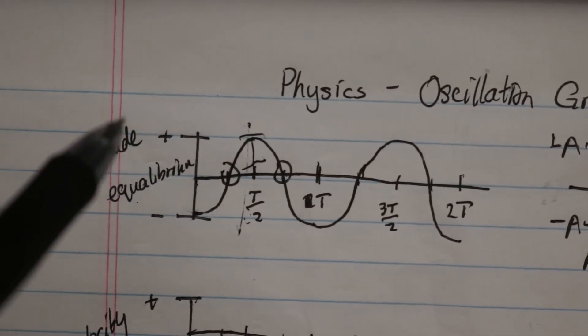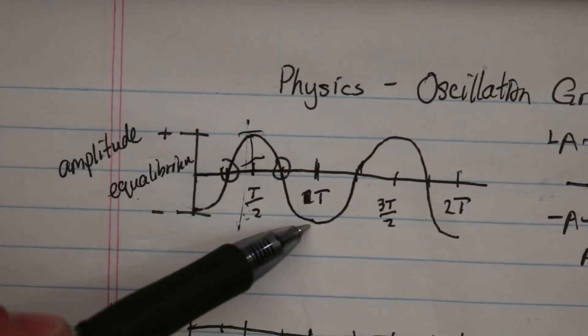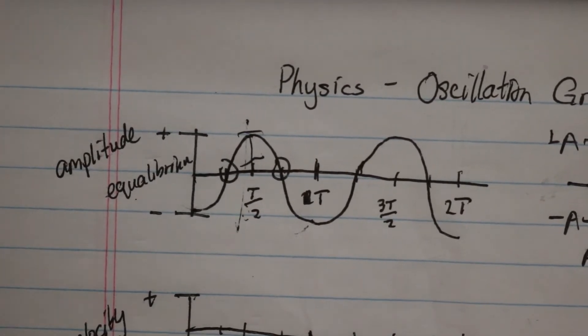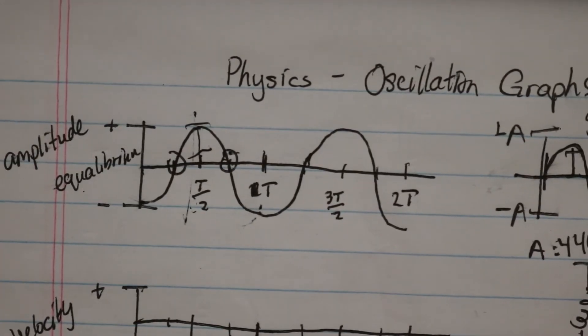Or if this were a pendulum, it would be, boom, it would just be on the other side. So now we've got to come back, and this part of the curve right here represents that coming back. So once again, we cross that point of equilibrium and then we're back where we started. So that's the amplitude graph.